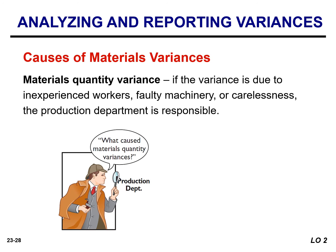The starting point for determining the cost of a significant materials quantity variance is in the production department. If the variances are due to inexperienced workers, faulty machinery, or carelessness, the production department is responsible. However, if the materials obtained by the purchasing department were of inferior quality, then the purchasing department is responsible.